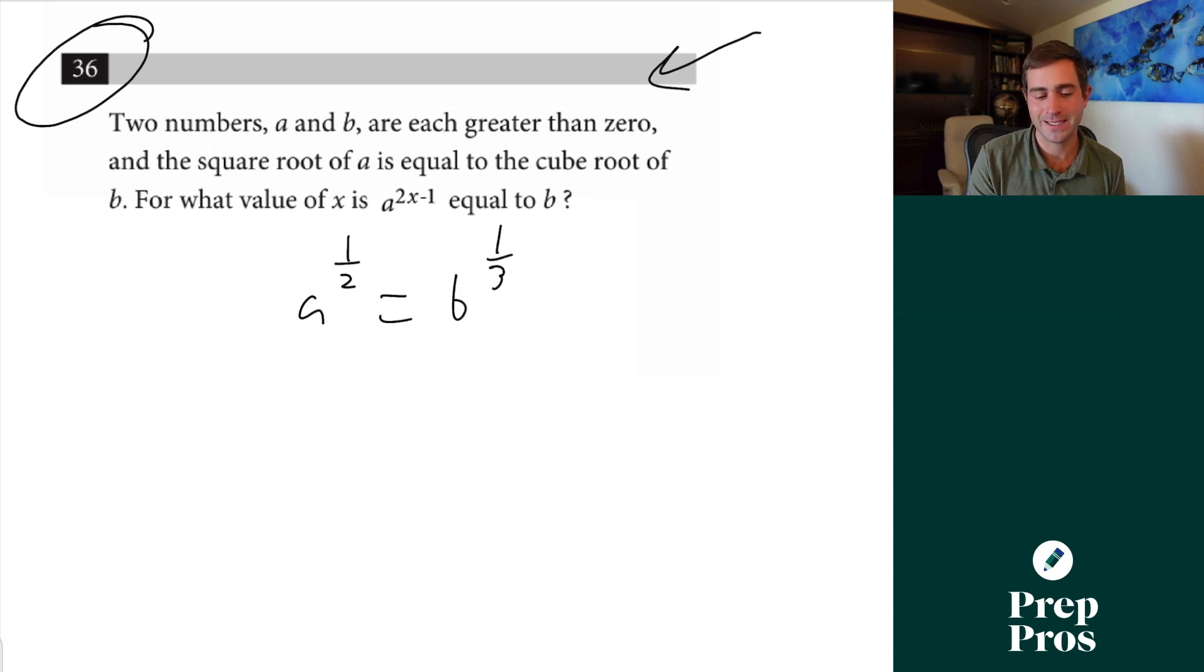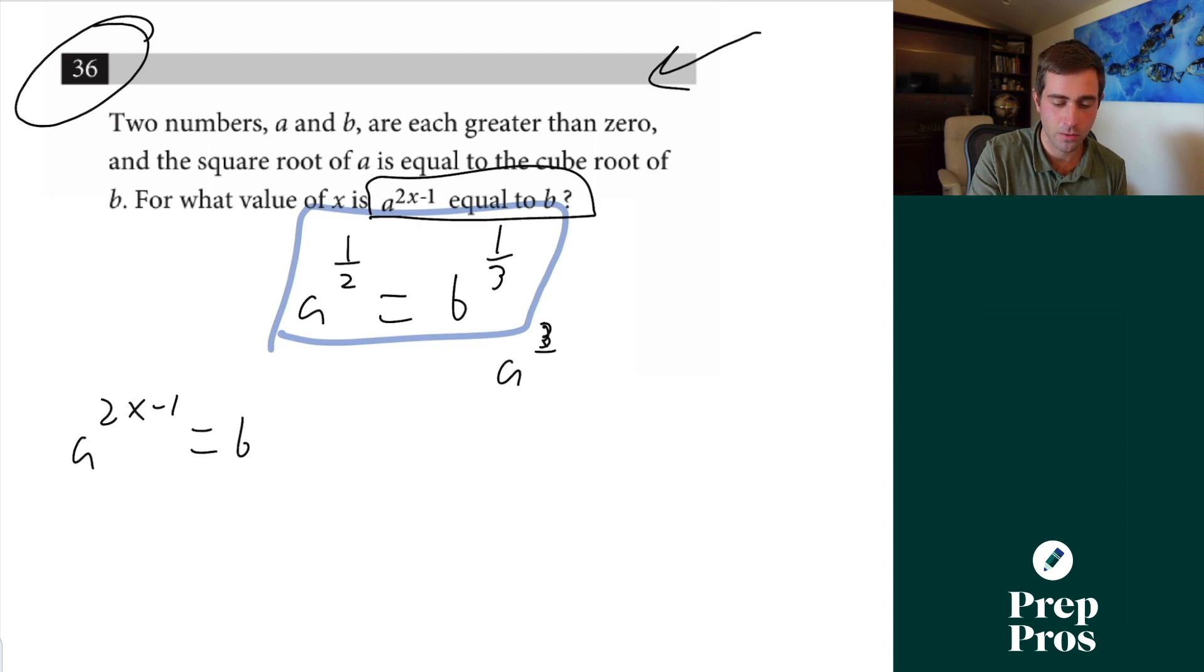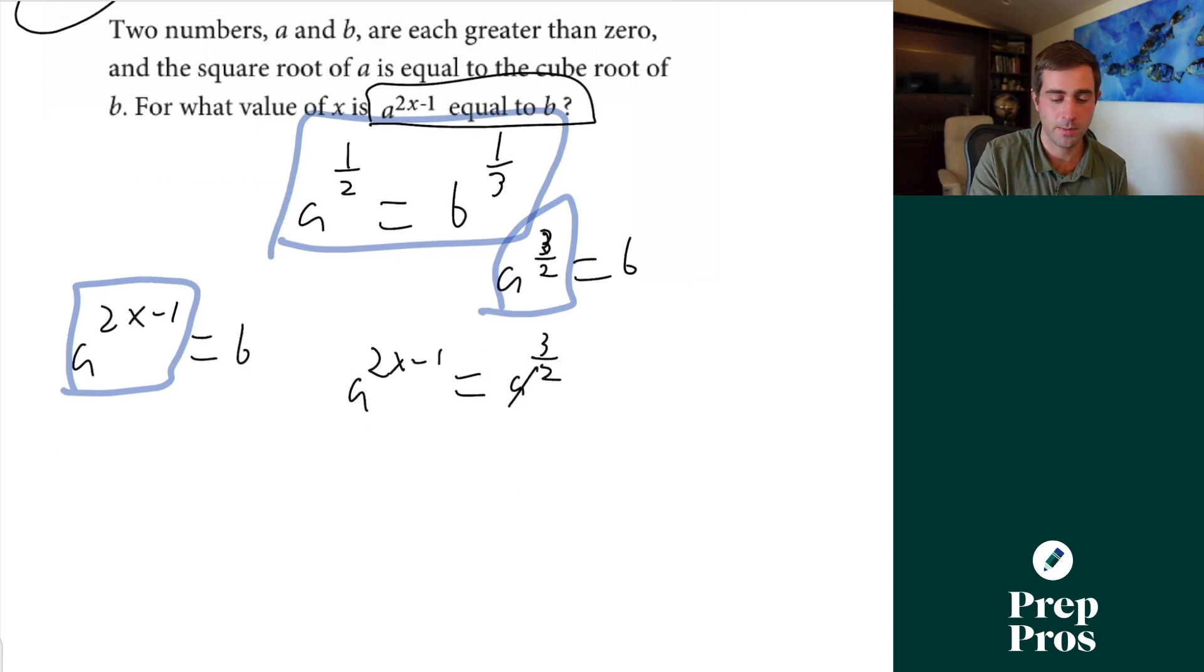For what value of x is a to the 2x minus 1 equal to b? Well we know this is equal to b, so if we want to solve for this, we know a to the 2x minus 1 equals b. Well we want to be able to set both a expressions equal to each other. So we want to work to get our original expression also in terms of b, which we can do by cubing everything. If we cube everything, this is going to be re-expressed as a to the three-halves equals b. Well now we can set our a to the three-halves and our a to the 2x minus 1 equal to each other. This is going to give us a to the 2x minus 1 equals a to the three-halves. From there we're simply going to have to cancel out our bases and now we get 2x minus 1 equals three-halves. That's going to end up giving us that x equals 5 over 4.